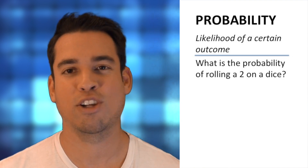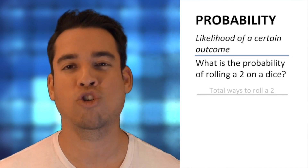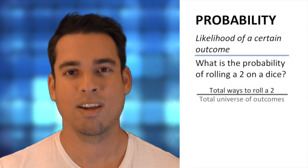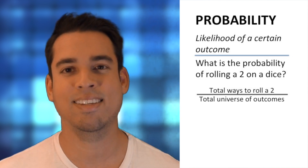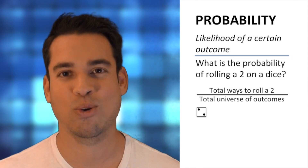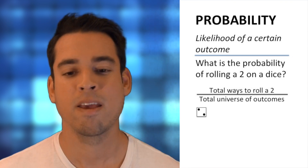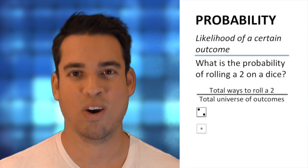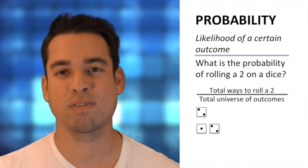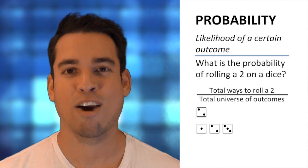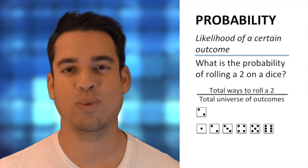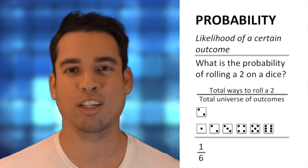We want to know the likelihood of rolling a two. We look at the total number of ways we can get what we want — the total number of ways to roll a two — over the total universe of all potential outcomes. There's only one way to roll a two. The total outcomes are one, two, three, four, five, and six. So the probability of rolling a two on a dice is one over six.